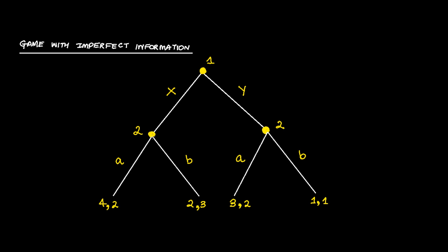Player 2, if he's sitting here, knows that he's sitting here and he knows that player 1 has chosen x. Once the game reaches here, then player 2 knows that player 1 has chosen x. When the game reaches here, if at all, then player 2 knows that player 1 has made the choice of y.